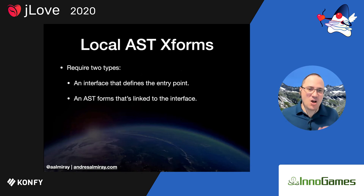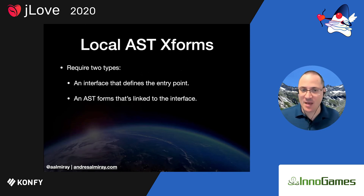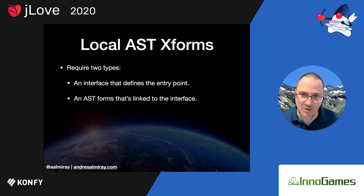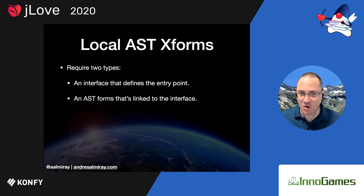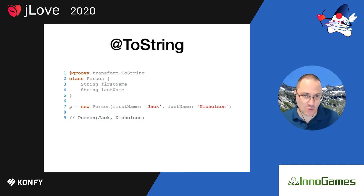Local AST transformations require two types: a hint for the compiler — typically done with an annotation that is the entry point — and the actual implementation of the changing behavior. Groovy ships with a bunch of AST transformations, both local and global. ToString is probably one of the most typical. This is how we consume the ToString AST transformation applied to a type, and when we create an instance of Person and print it, it prints the class name and values of all properties.